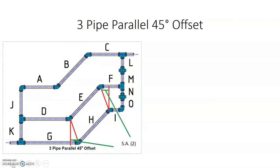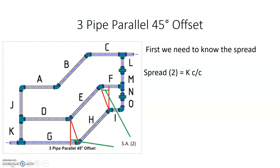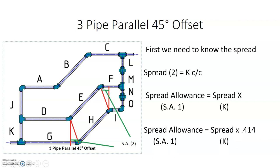Once we have spread allowance 1, we need to calculate a spread allowance for the bottom part of the offset, because the spread between the two pipes at the bottom could be very different — smaller or larger. We need to know the spread between D and G to maintain it throughout, referenced by measurement K. We call this spread allowance 2 (SA2). The formula is: SA2 = spread 2 × 0.414, where spread 2 is the K dimension from center to center.